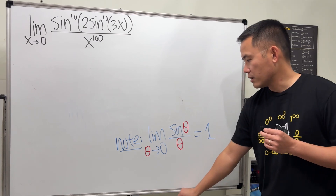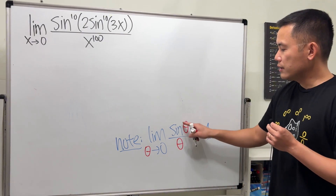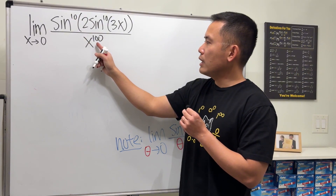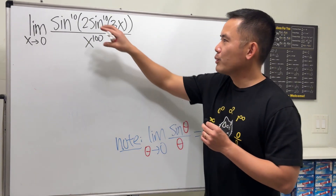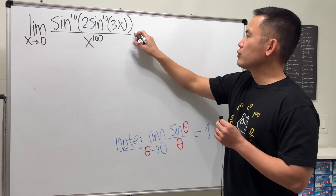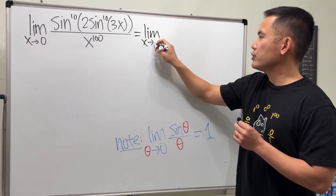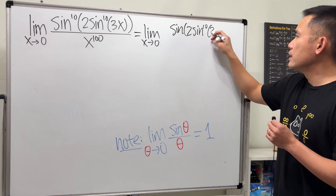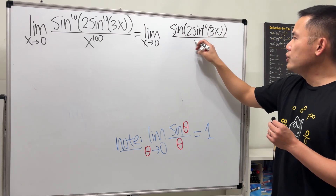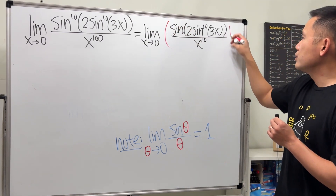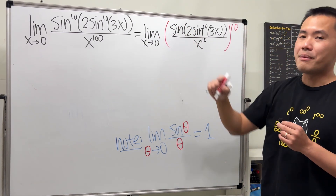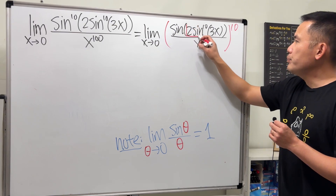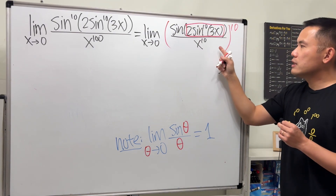We'll just take that as a fact — it's a very standard limit in Calculus 1. To make this work, notice that we have sine to the first power on top, but on the bottom we have x to the 10th, which is x times x... 10 times. I'm going to factor out the 10th power. So we'll have the limit as x approaches zero of sine^10(3x) over x^10, by raising sine(3x) to the 10th power.